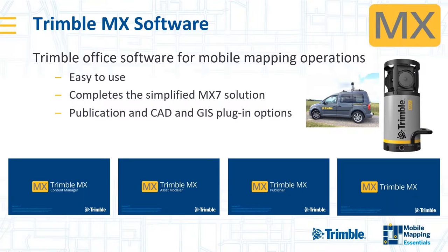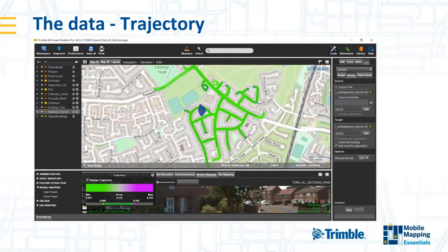I'm going to show some short demonstrations on extracting data using MX software and also talk about the publisher. Inside Trimble MX Asset Modeler Pro, the first thing you see after pulling in processed data is your trajectory with quality parameters. In this example it's all colored green, indicating centimeter-level trajectory quality.